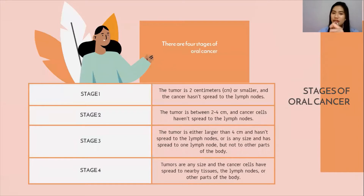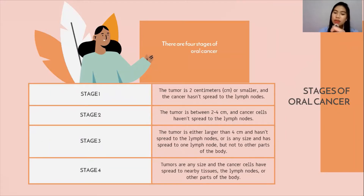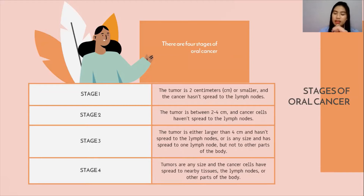There are four stages of oral cancer. Stage one: the tumor is two centimeters or smaller and the cancer hasn't spread to the lymph nodes. Stage two: the tumor is between two to four centimeters and cancer cells haven't spread to the lymph nodes. Stage three: the tumor is larger than four centimeters and hasn't spread to lymph nodes, or is any size and has spread to one lymph node but not to other parts of the body. Stage four: the tumor is any size and cancer cells have spread to nearby tissues, lymph nodes, or other body parts.